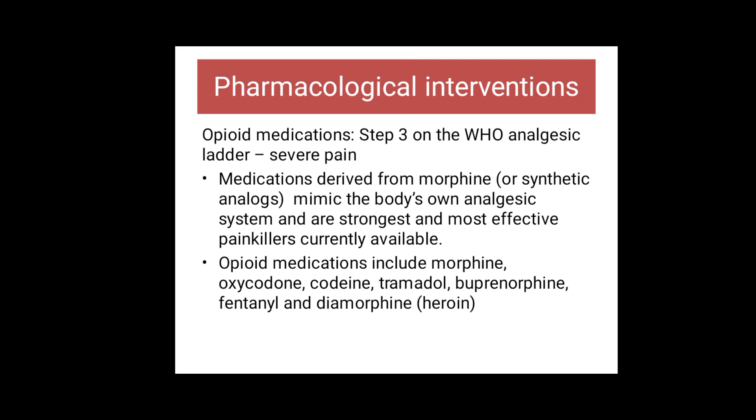For moderate to severe pain, opioid medications are used. These are medications derived from morphine or are synthetic agents that mimic the body's endogenous energy system and are the strongest, most effective painkillers currently available. Opiate medications include morphine, co-codamol, and related medications at step 3.